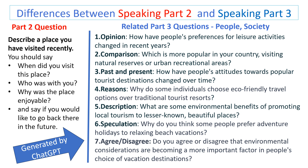The Part 3 questions were generated by ChatGPT from the topic of the Part 2 question. You can expect questions in Part 3 of different types or categories, such as opinion, comparison, past and present, reasons, description, speculation, and agree/disagree.